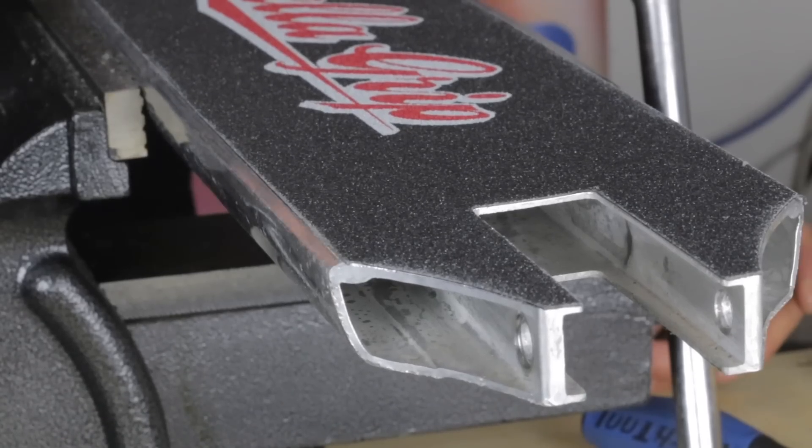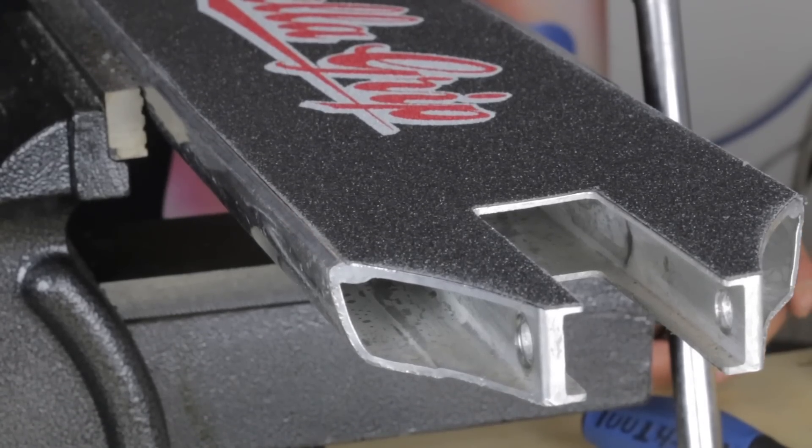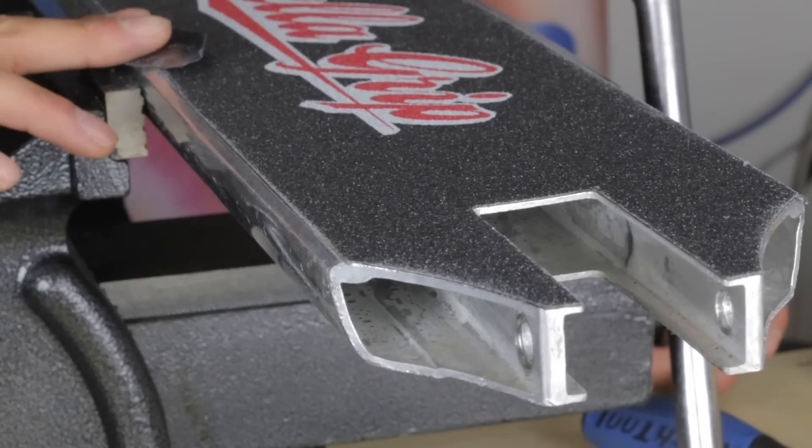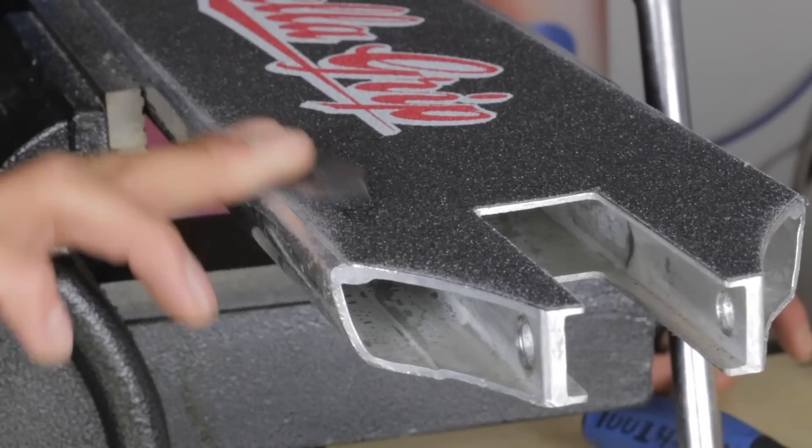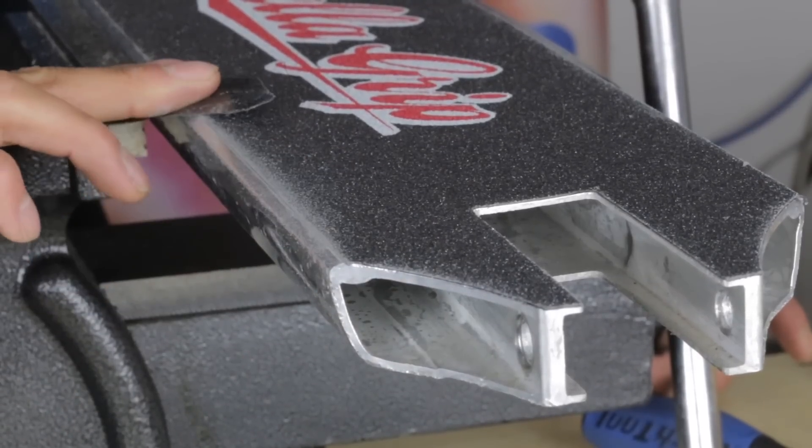So you probably have a whole bunch of leftover grip tape. You want to grab that and file the edges out so your grip tape doesn't peel as you ride, just file it out all the way, all around the deck.